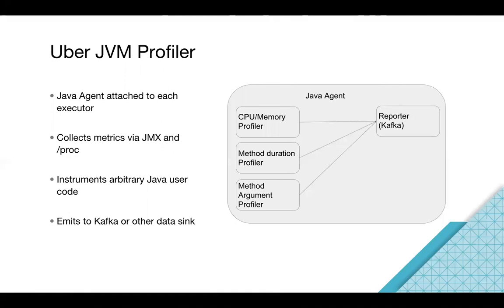So we can collect a lot of metrics. The Java agent provides some ways to do this — for example, using JMX (Java Management Extensions), a Java system-level metric system. You can get CPU usage, memory usage, and more. We also found that's not always enough. For Linux especially, there's a special file system called the proc file system, where you can get more details about a process — for example, native memory usage. Because Java is a managed-memory language, it's hard to get native memory information otherwise. Through the proc file system you can get that detailed information, which is very helpful. We'll talk about a use case for this later.